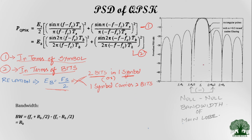When we plot the power spectral density of QPSK, we get a sinc-squared waveform with a main lobe and side lobes. Bandwidth occupancy is calculated as the null-to-null bandwidth of the main lobe. The upper null is at fc + Rb/2 and the lower null is at fc − Rb/2. Taking the difference, the null-to-null bandwidth of QPSK equals Rb, the bit rate.